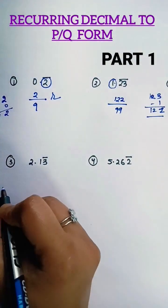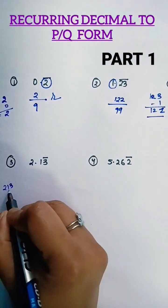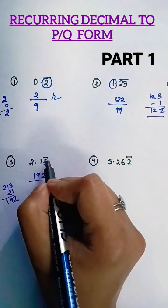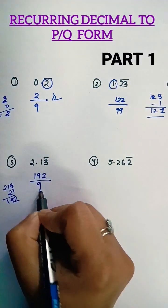So now the third one is 2.13 bar. So 213 minus 21, that is 192, so 192 divided by... see, after the decimal there is only one digit under bar, so I will write 9.